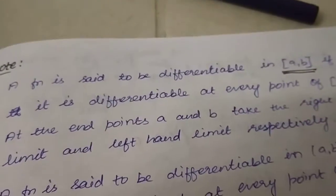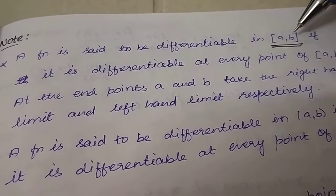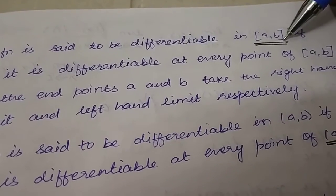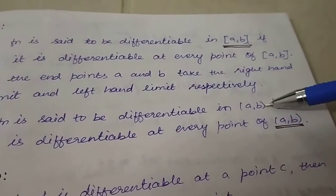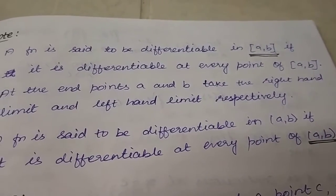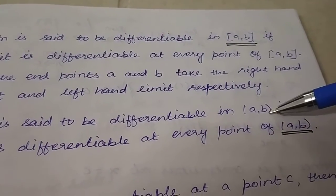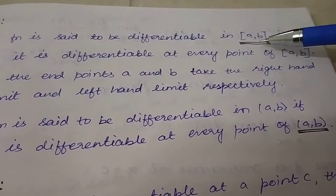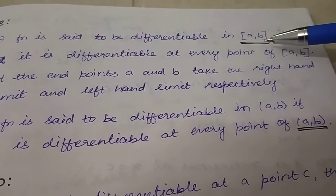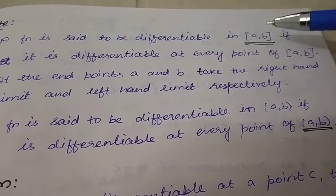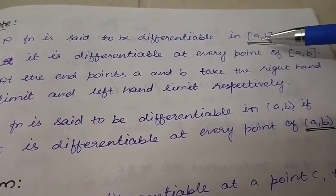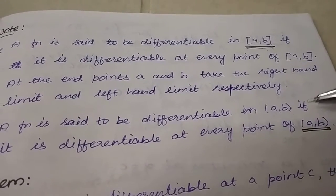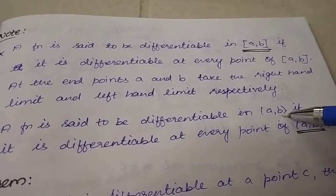If you are given a closed interval [a, b], this bracket notation means the values from a to b are included, including the endpoints a and b. An open interval (a, b) means the endpoints a and b are not included. There is a difference between these two types of intervals.